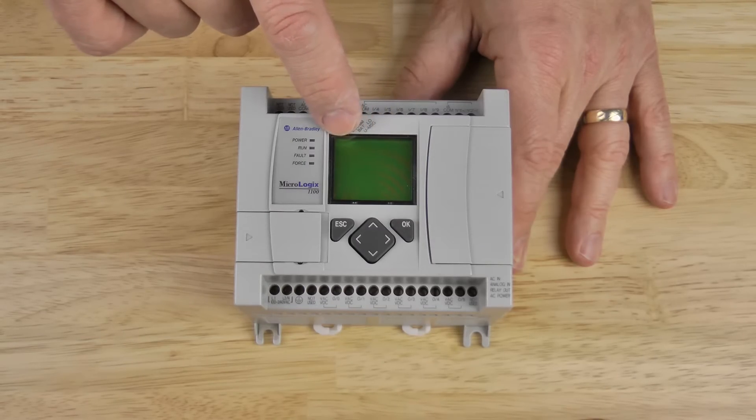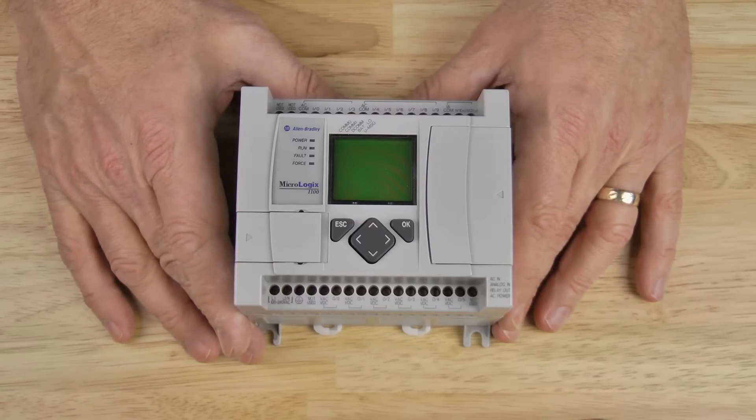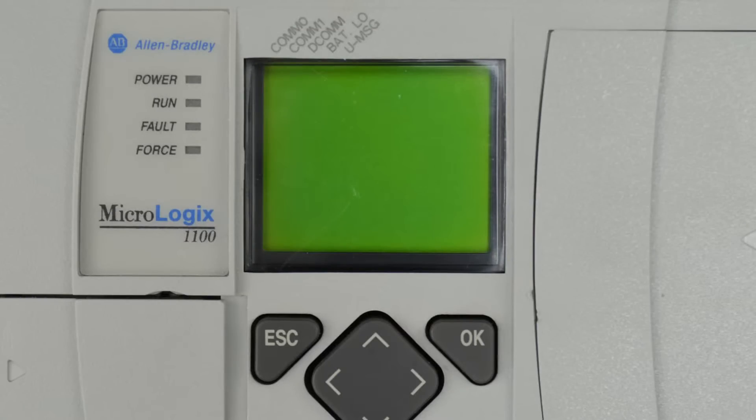Below that we have the LCD screen itself, under which we find the Escape, OK, and directional button pad. Let's zoom in closer for a better look.